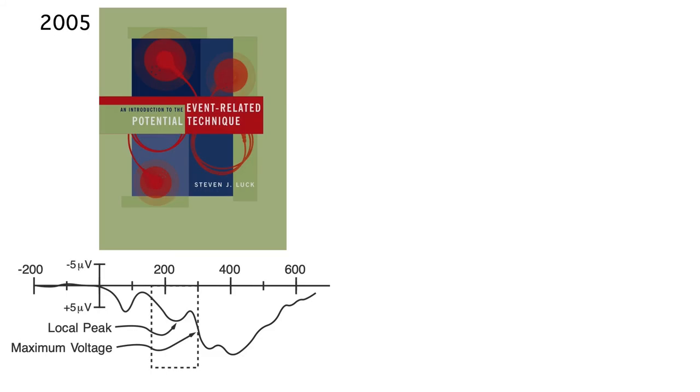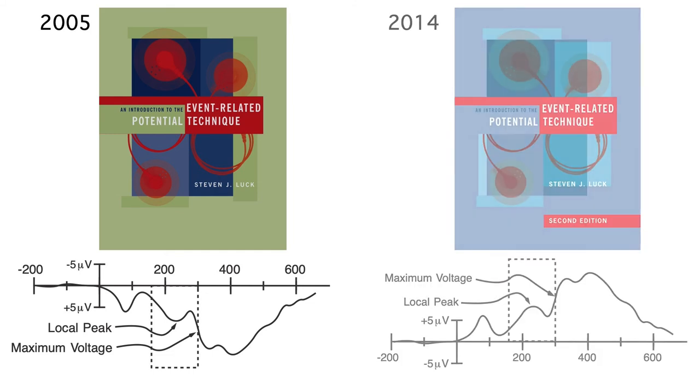Now I'd like to briefly discuss an oddity about how ERPs are sometimes plotted. Here's a figure from the first edition of my ERP book, and here's the same figure from the second edition. Do you see the difference?